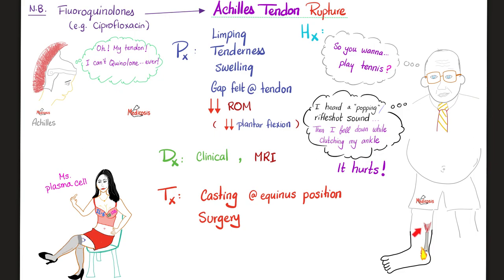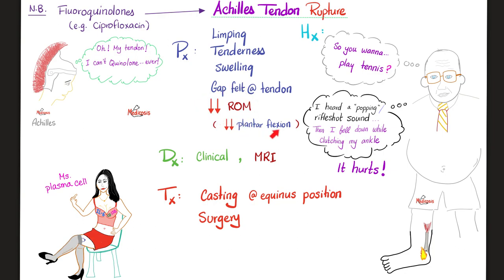Achilles tendon is the most famous tendon in the body — it's the tendon of the gastrocnemius and soleus muscles. It can get inflamed (Achilles tendonitis — hashtag fluoroquinolones) or it could rupture (also hashtag fluoroquinolones). Classic scenario: a morbidly obese, out-of-shape executive who hasn't trained for decades wants to impress someone in a tennis match. While playing intensely, he heard a pop sound like a rifle shot, then fell clutching his ankle. His Achilles tendon ruptured — you can feel a gap where the tendon used to be. He cannot walk properly, has tenderness, swelling, and decreased plantarflexion.